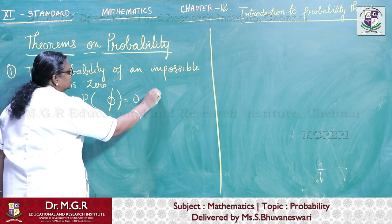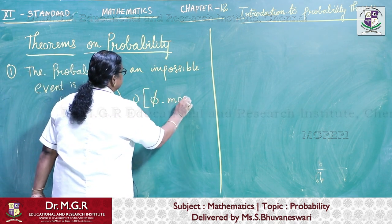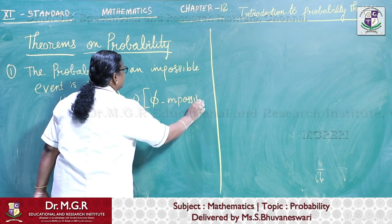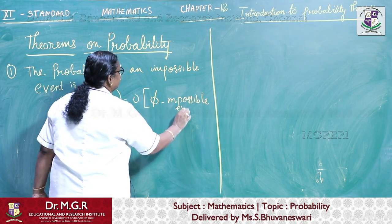Phi is called the impossible event. Already we have seen in our first chapter, is it not? Phi is the impossible event.